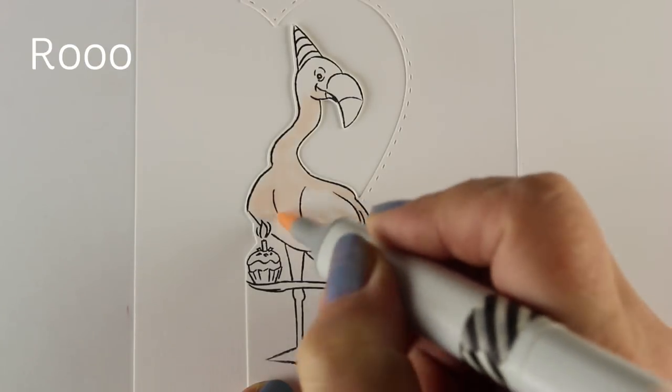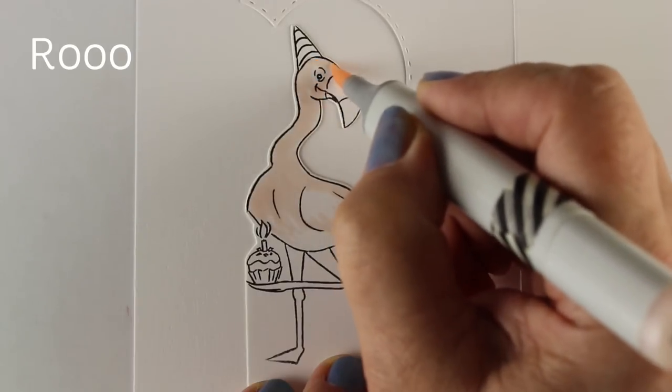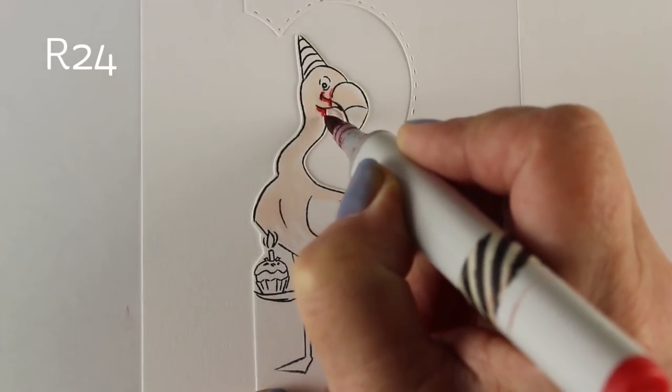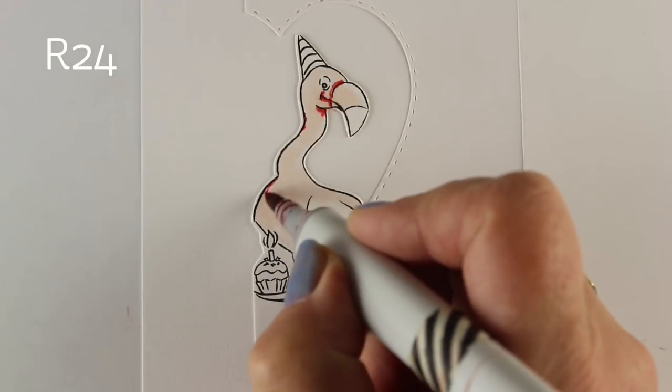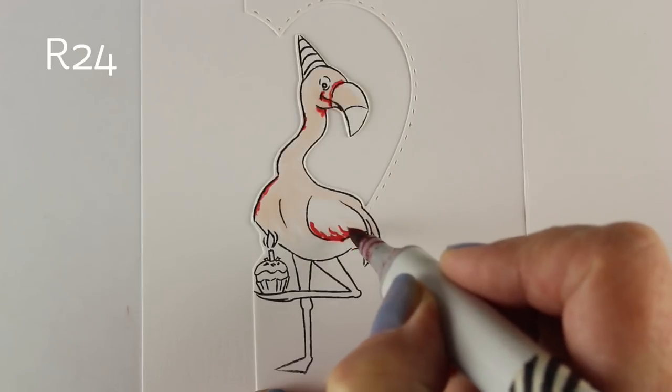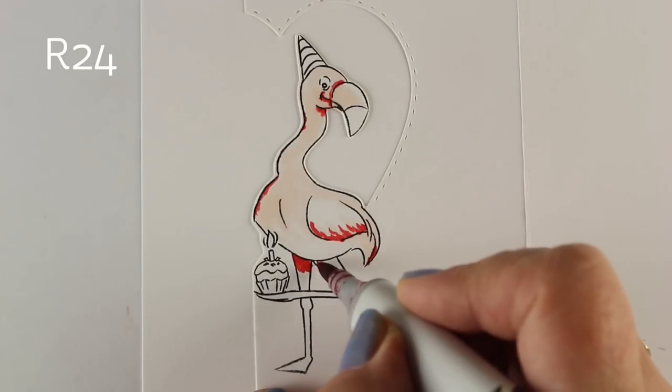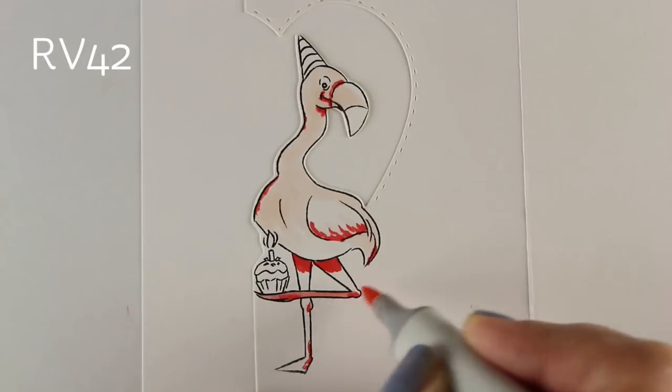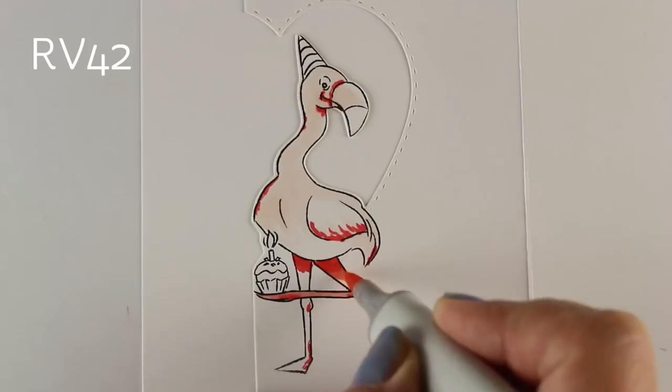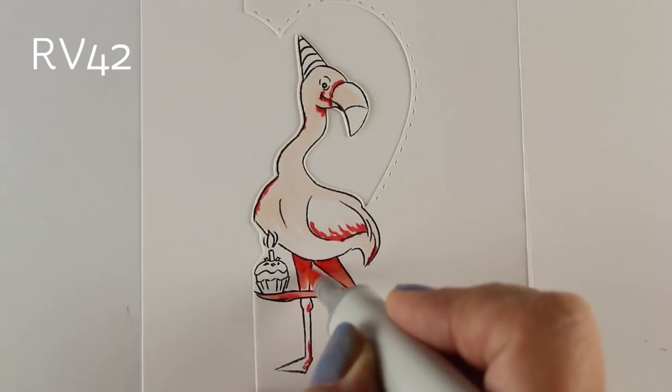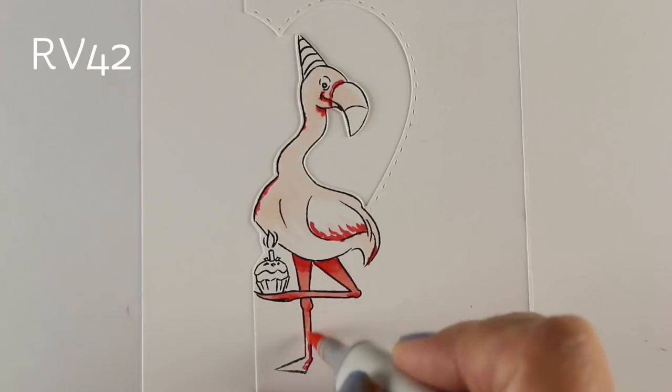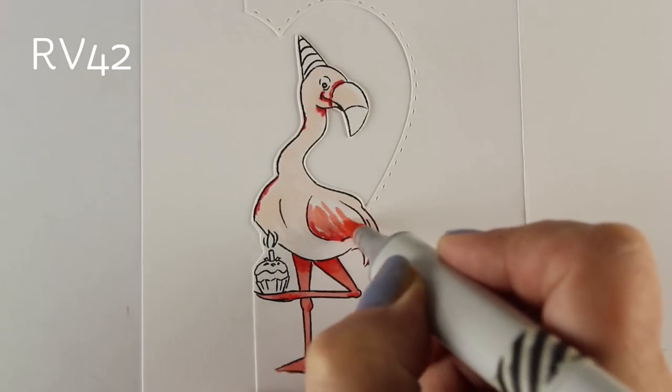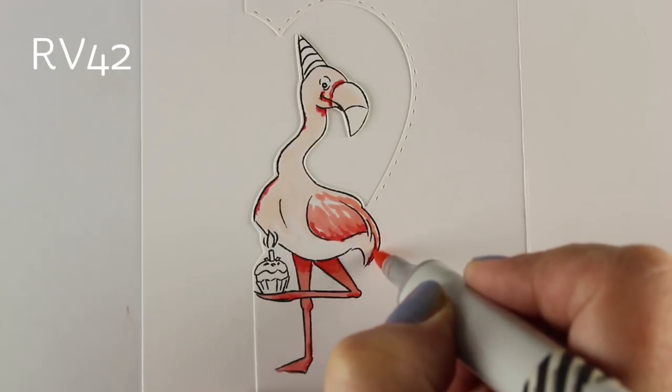So I'm going to do some Copic coloring. I'm only going to color one of them because the other one is like the same but different. I'm using some colors that are not your RVs. A lot of people use RVs for flamingos, but I decided to look them up on the web and look at what they really look like. They have a lot of really strong red. So I decided to throw a little R24 in there and let the rest of it be the pinks, but not the RV pinks, but the red pinks. I shouldn't say not the RV pinks because RV42 is more of a red pink than a pink pink.